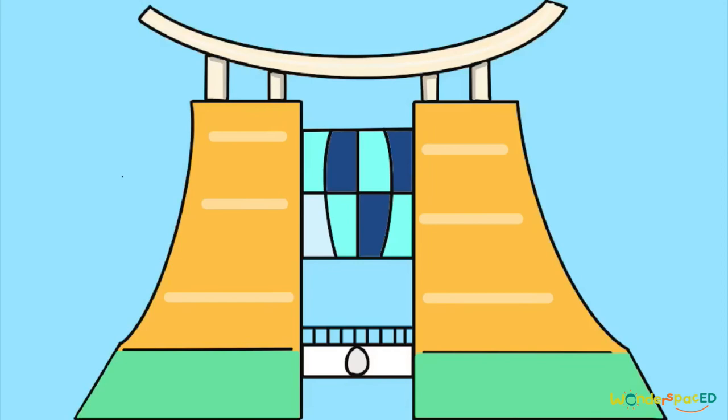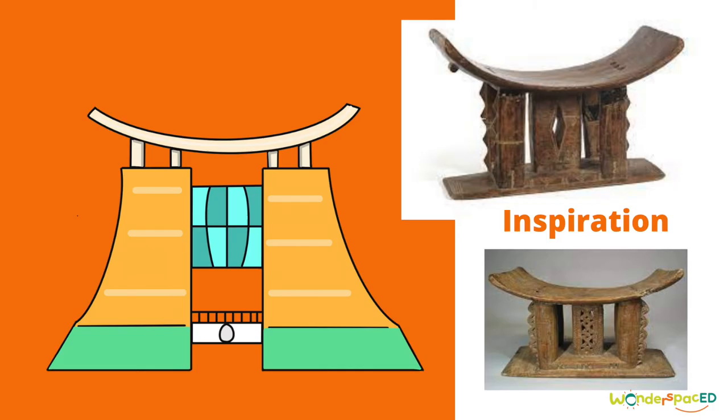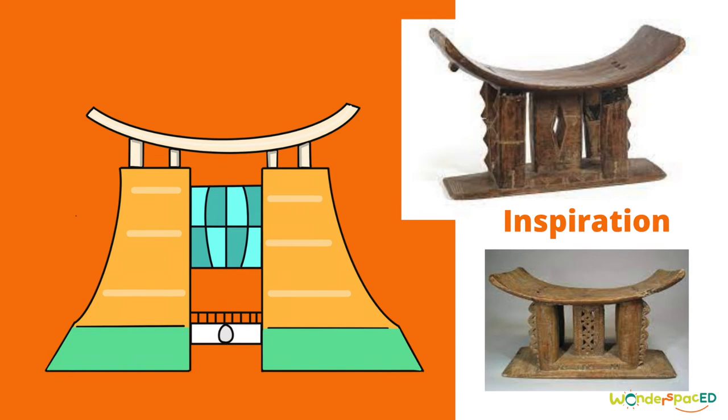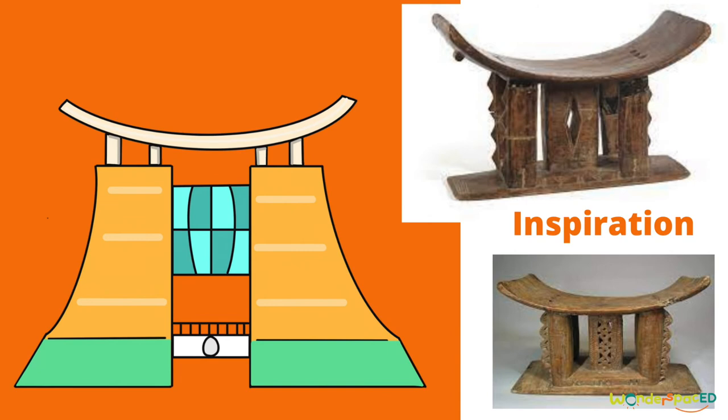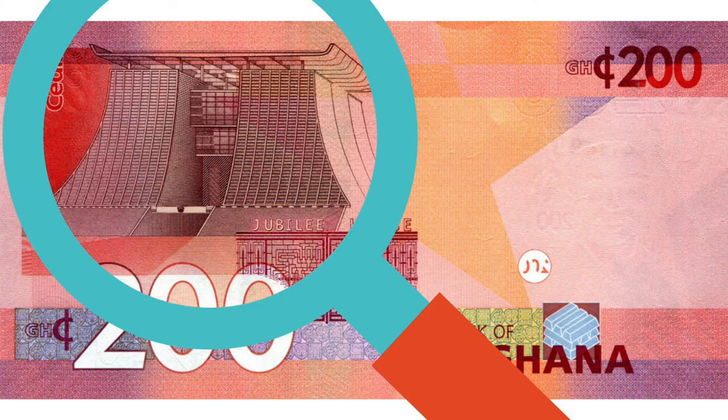Does the shape of this building look like anything you've ever seen before? The architect was inspired by the shape of the Ashanti stool. You can also find an image of Jubilee House at the back of the 200 cedi notes.